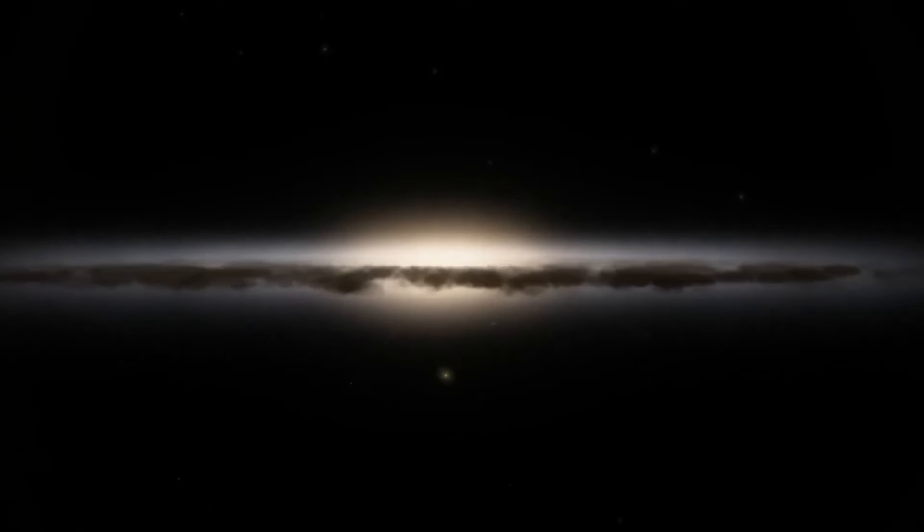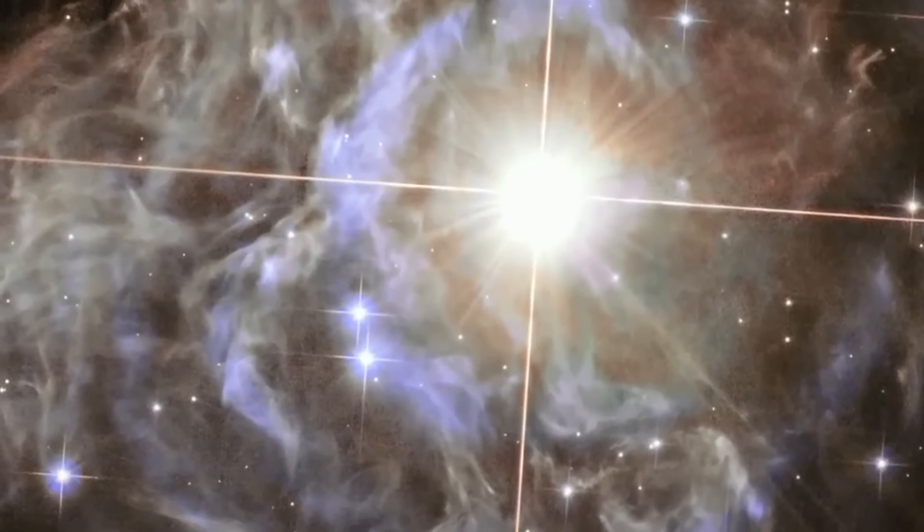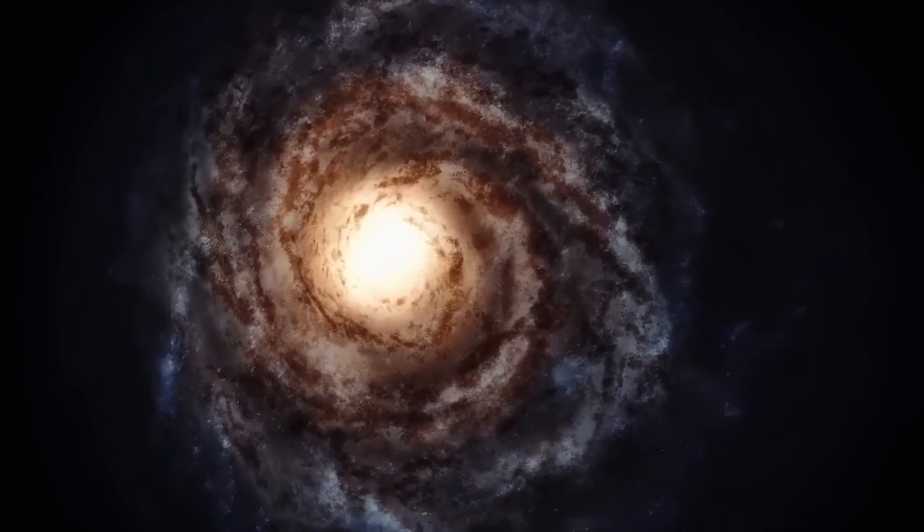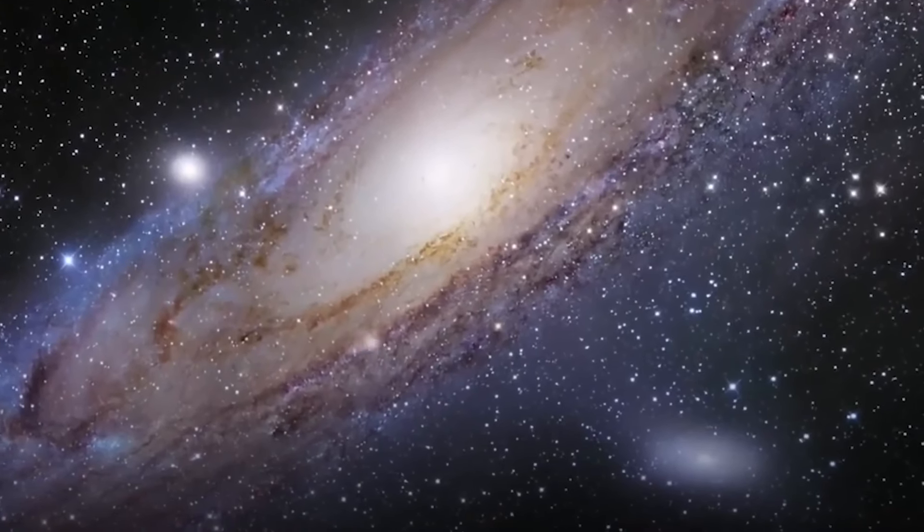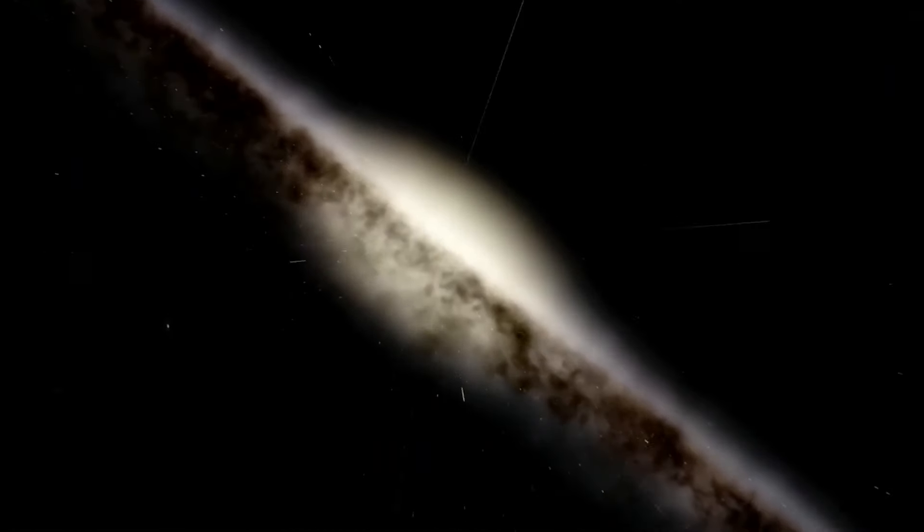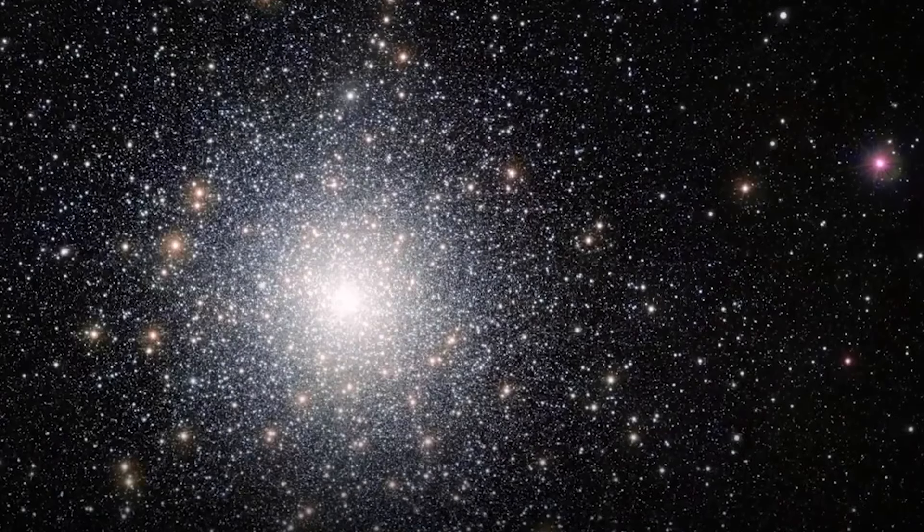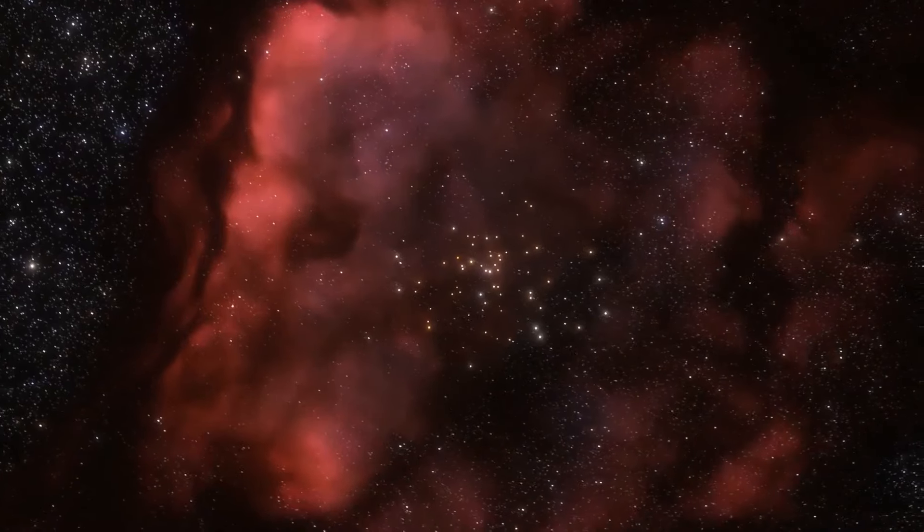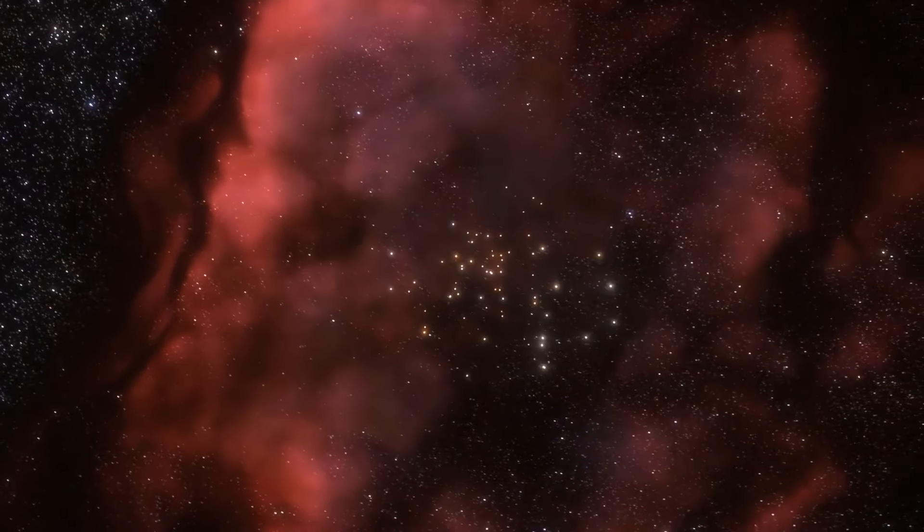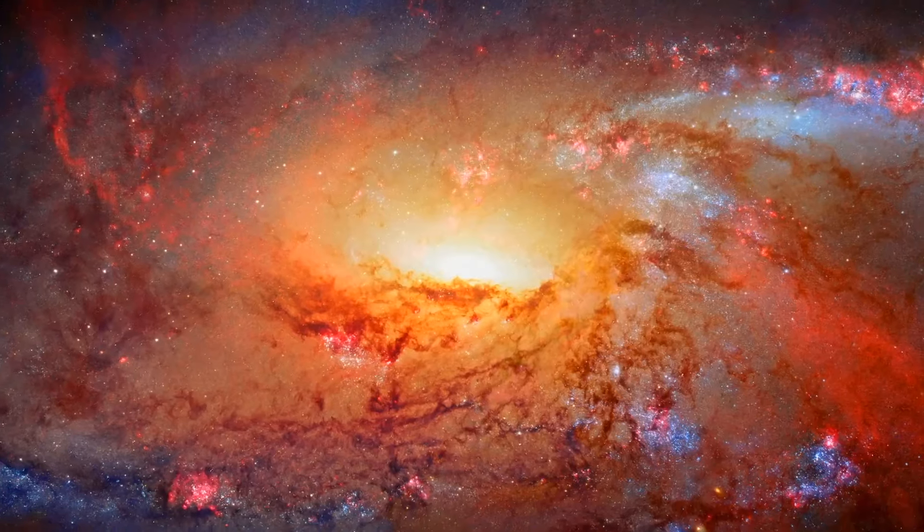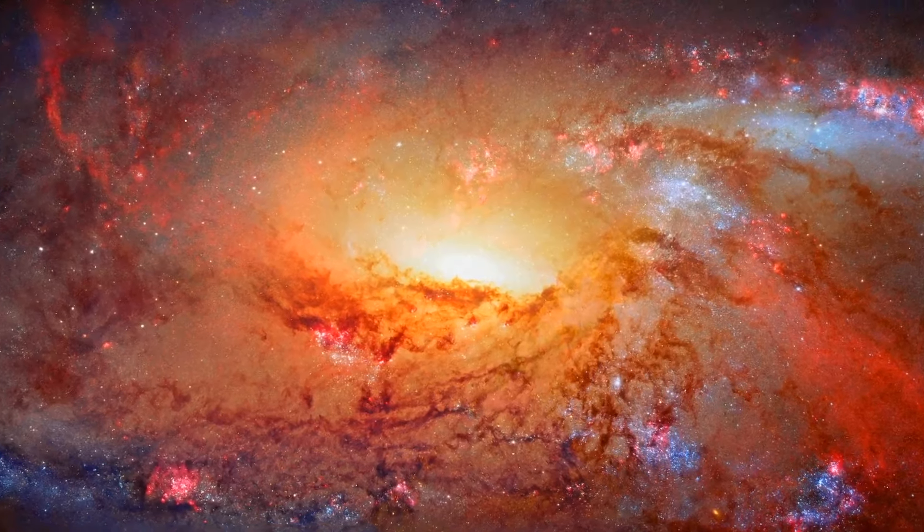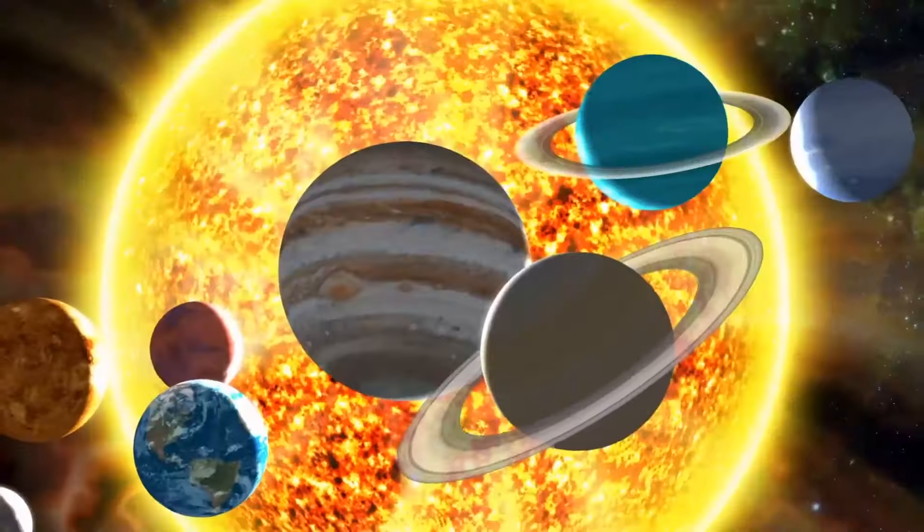Imagine, if you will, our observable universe as a grand cosmic show. We are privileged to have front row seats, but there's a catch. We're watching everything on a delay. When we observe a star located, let's say, 10 light years away, we're not seeing it as it is now. We're actually witnessing the light that left it 10 years ago. The farther away an object is, the older the light we observe. By examining objects at different distances, we can effectively map the history and evolution of the universe, providing us a glimpse into its own awe-inspiring past.